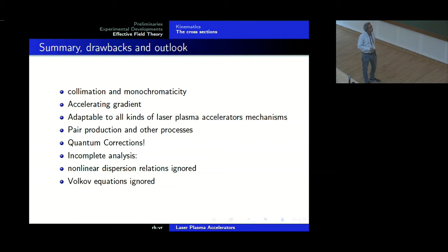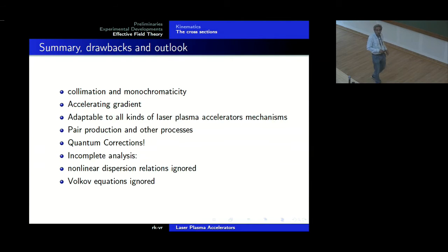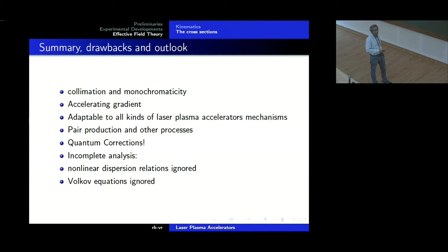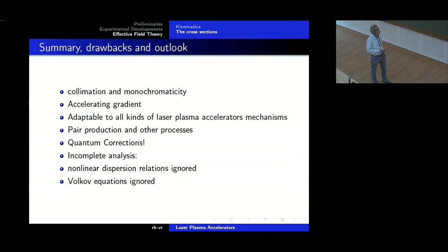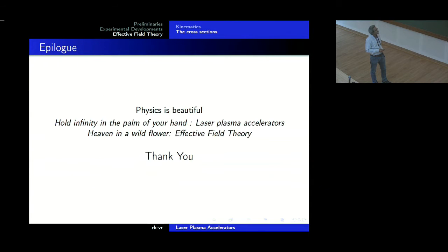We have ignored non-linear dispersion relations. We have ignored pulse shaping. We have ignored the Volkov equations — Volkov wrote it probably soon after Dirac wrote his equation. For example, if there were a very strong magnetic field, I should be doing my field theory with Landau levels, because the electrons go and sit in Landau levels and I cannot use free states. So here I should use Volkov equations in the presence of a very strong electromagnetic field. We have to incorporate that. If there is any sense in what we are doing, probably this is the right time to embark on this.